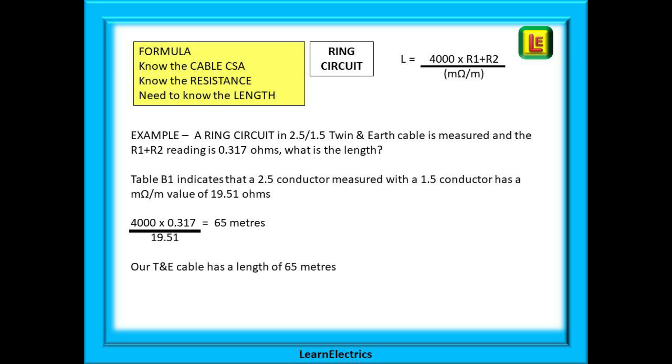2.5 twin and earth again with a 1.5 millimeter earth. This time we include the factor of four and begin with four times 1000. So 4000 multiplied by 0.317 and divided by 19.51 tells us that the length is 65 meters.